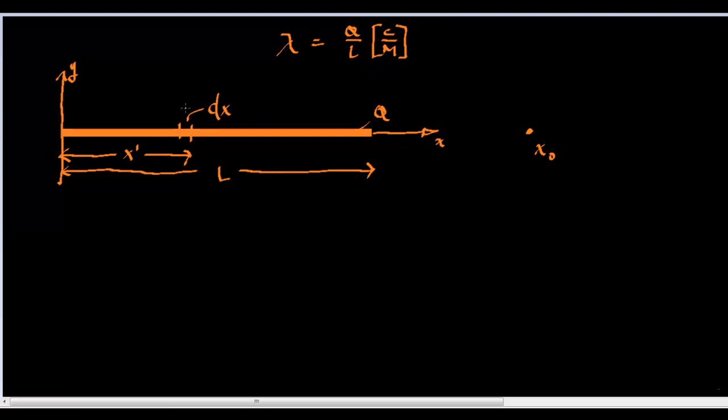So in fact, let's look at that. We're going to call that dq, dq prime. In fact, we'll call both of these prime. Everything that's associated with this point, we'll call prime.